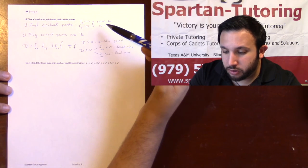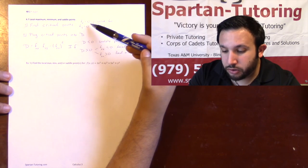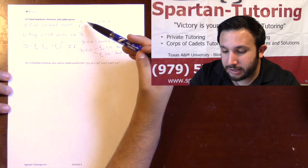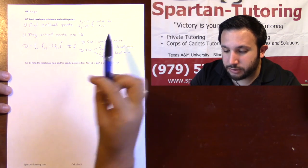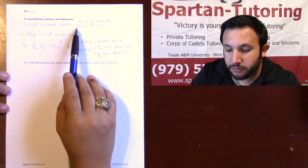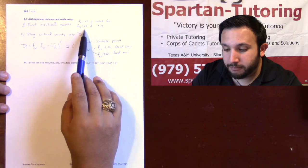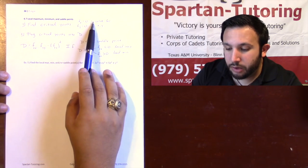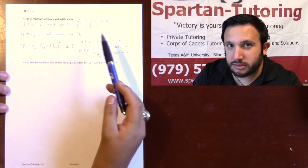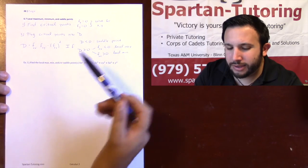The way you find your critical points is you're going to take the partial derivative of f with respect to x, set it equal to zero, take the partial derivative of f with respect to y, and set it equal to zero. Then you'll solve for x's and y's — I'll show you how to do that when we get there.